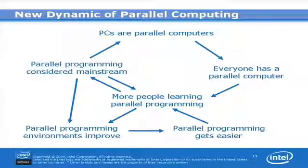So how has this changed the dynamic of parallel computing? With multi-core processors, PCs are now parallel computers — your desktop, your laptop, your netbook. Everyone has a parallel computer. So more people are learning to do parallel programming to support these new platforms. Parallel programming is now becoming mainstream, and parallel programming environments are going to improve because more people will be demanding easier and better ways to do it. This will all lead to parallel programming getting easier.